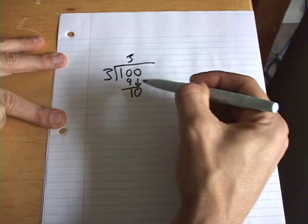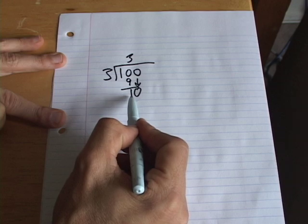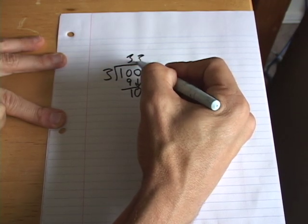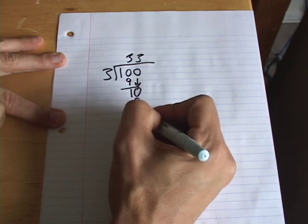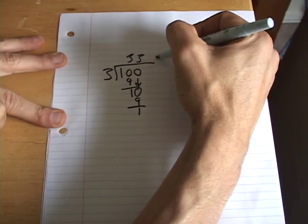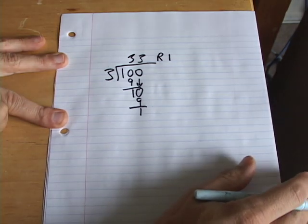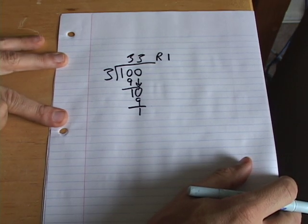And then you drop the 0. And you have a 0 here, so now you go 3 goes into 10 how many times? Well, it goes in 3 times. So then you say 3 times 3 is 9. Subtract and there you go, 33 remainder 1. That's a more conventional way of how to do long division.